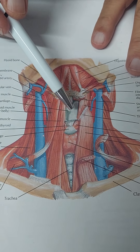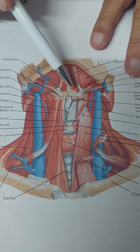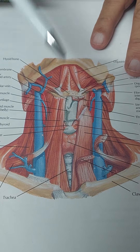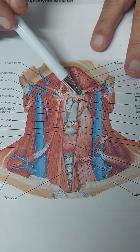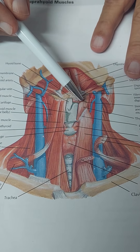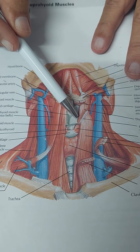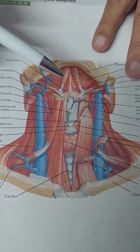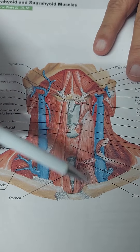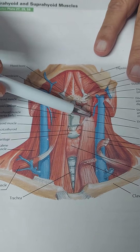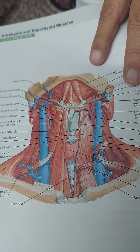Then again you can see the thyroid cartilage and the hyoid bone. This is the thyrohyoid — a small muscle — and then this is the sternothyroid muscle.